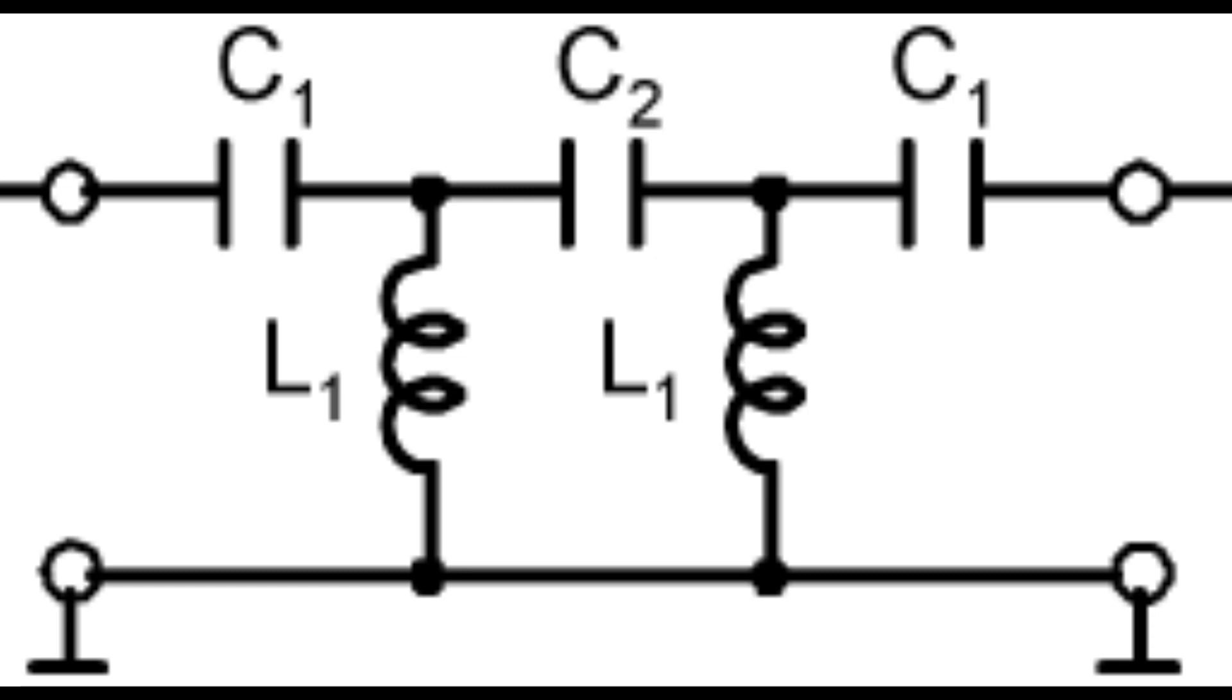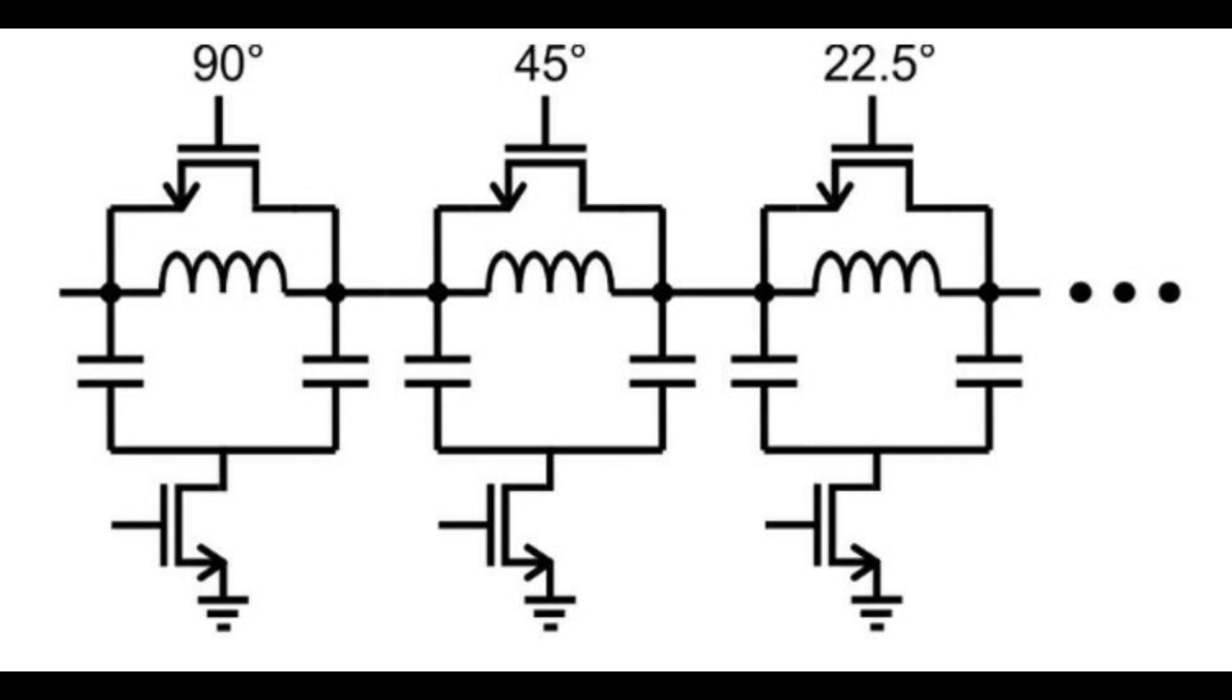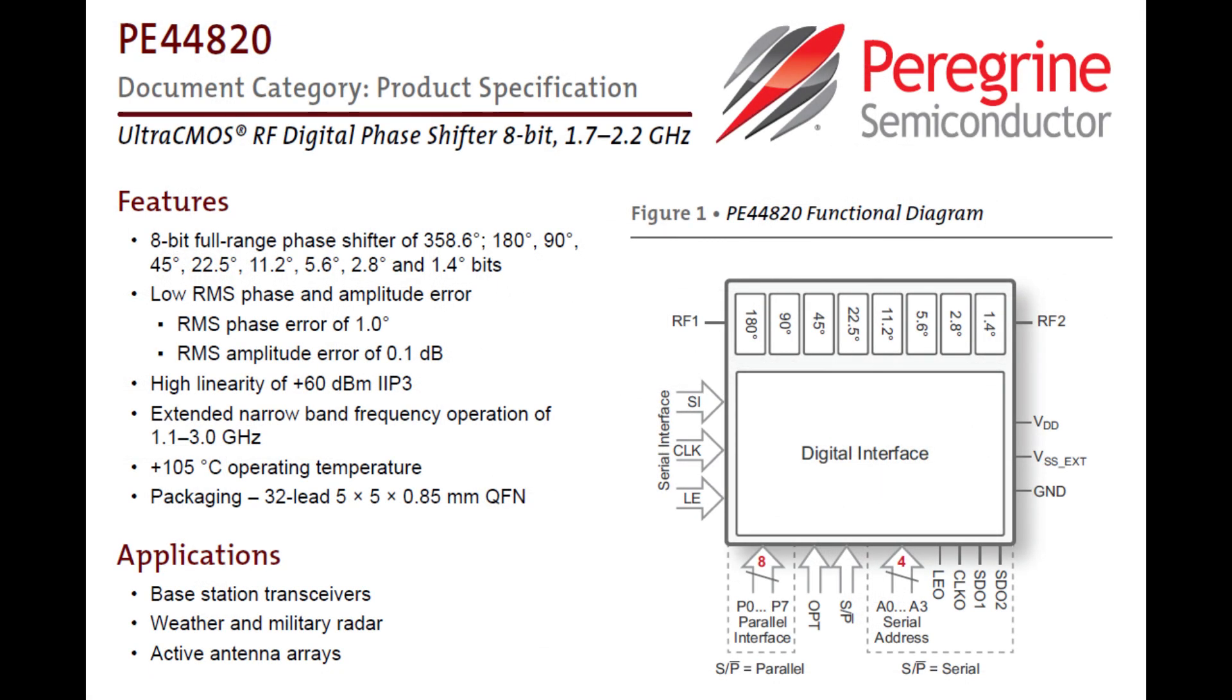So you can go a step further and say, well, if I can do it once, maybe I can stack these things up, right? So here's a cool little thing where we have different LC networks and we can either turn on the transistors above to disable them or turn the transistors below to enable them. So basically we have a three bit programmable device here and we can add these things in different ways.